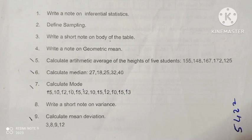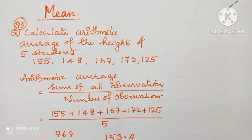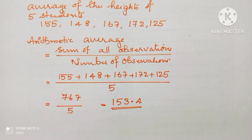Question number 5 is, calculate the average height of 5 students: 155, 148, 167, 172, 125. We can find the arithmetic average or mean by adding all the observations divided by number of observations. The final answer is 153.4.